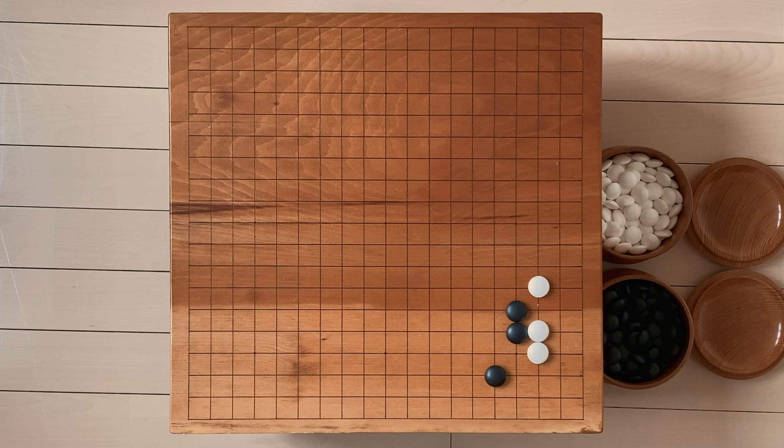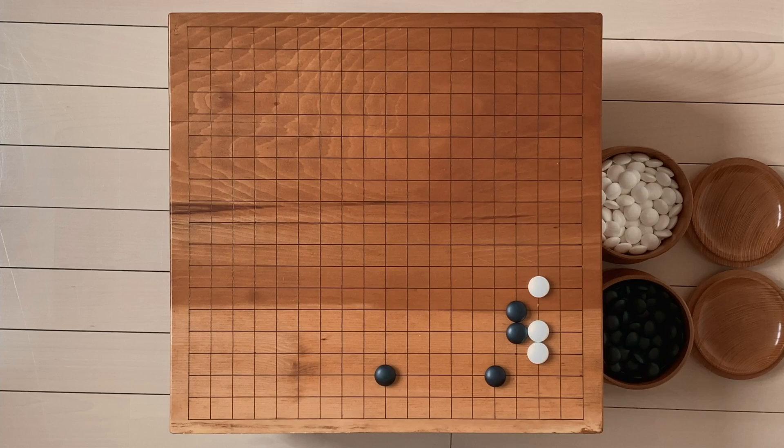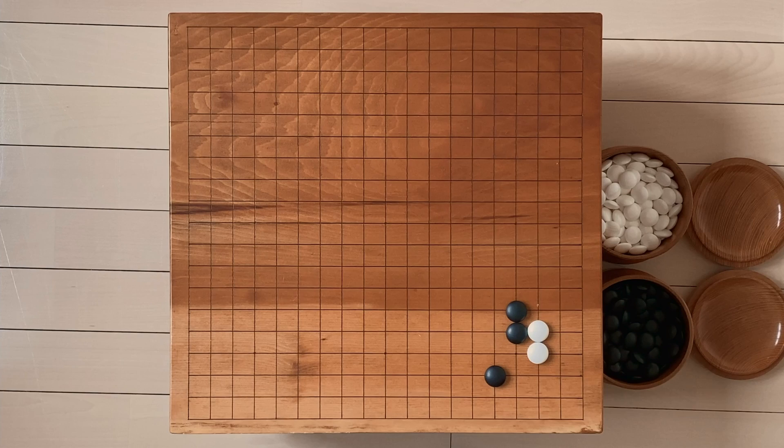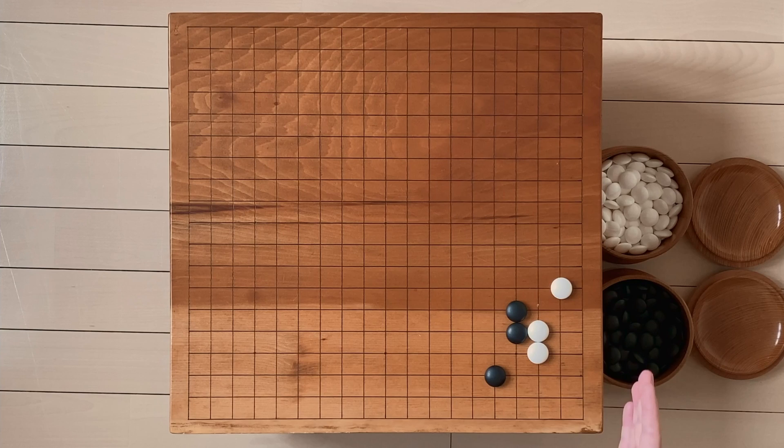Black can play somewhere else. Usually black would extend like this. Or, you know, black can, if he wants to leave this wall, he can go somewhere else. That's perfectly fine too. This is the end of the joseki. White's other response, and this is the more modern one that the AIs have thought up, is very similar to the 3-3 invasion. The knight's move here. Both of these are acceptable.